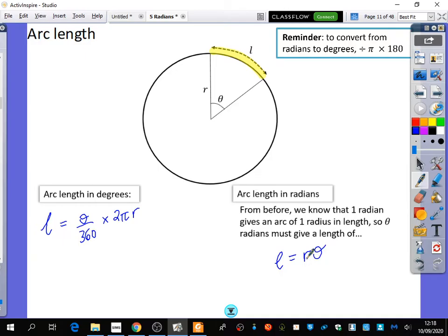If this is the radius and theta and L, I've said from before, we know that one radian gives an arc of one radius in length. So theta radians must give a length of theta. If the radius is one, the arc length would be the radius multiplied by theta, because this is already in radians. Now, I'm not going to just ask you to believe me. I'm going to try and show you with a conversion about why this formula works.